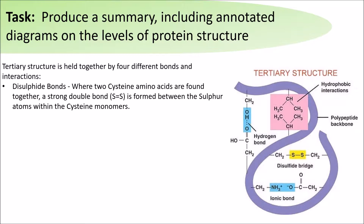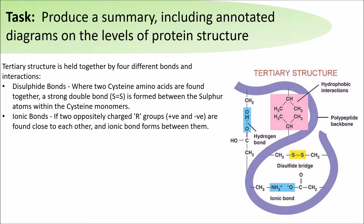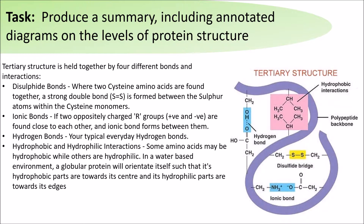Disulfide bridges occur where two cysteine amino acids are found together, forming a strong double bond between two sulfur molecules. Ionic bonds are found if two oppositely charged R groups are close enough together. Hydrophobic-hydrophilic interactions involve amino acids causing some parts of the protein to orientate towards water and some parts to orientate away from water.